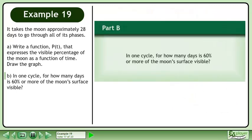Now we'll move on to part b. In one cycle, for how many days is 60% or more of the moon's surface visible?